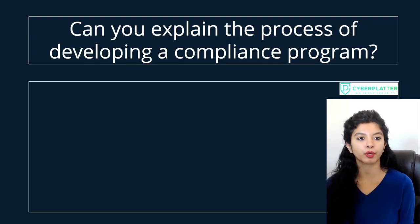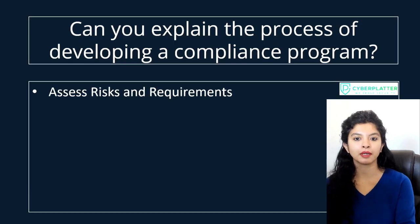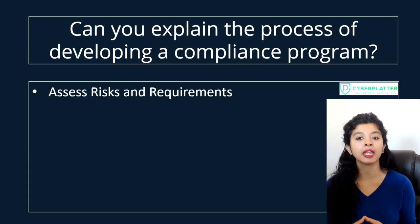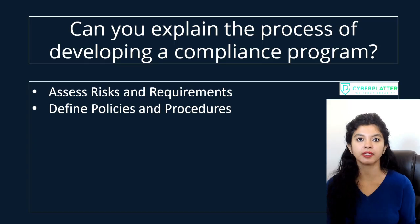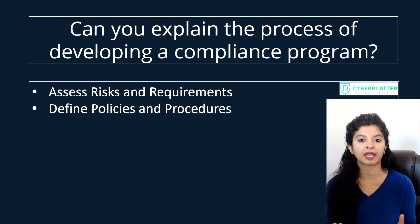Next question: Can you explain the process of developing a compliance program? Let's look at a step-by-step guide. The first step is to identify applicable laws, regulations, and industry standards, like HIPAA, SOX, or GDPR. Then you perform a compliance risk assessment to find areas of potential non-compliance — for example, a hospital might identify high-risk areas like patient data handling and billing practices. After that, the next step is to create clear policies outlining rules and expectations for employees, and develop procedures detailing how compliance will be maintained day-to-day — for example, drafting a HIPAA privacy policy explaining data access, retention, and sharing protocols.